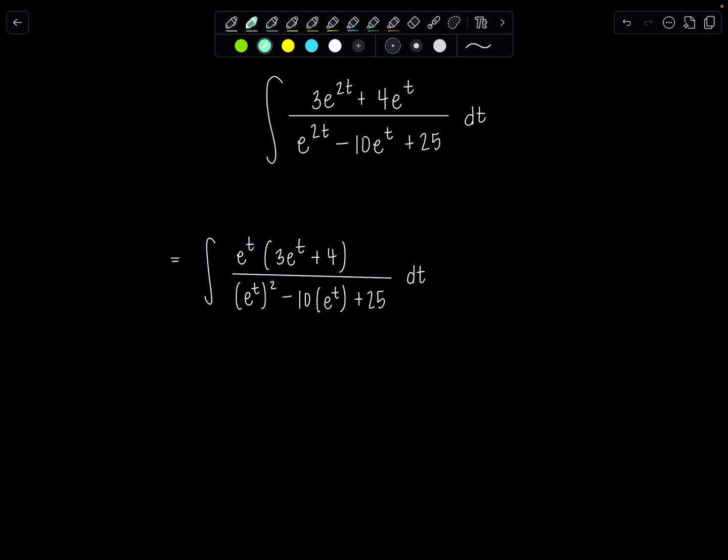Perfect. So now things are all in place if I go ahead and let u equal e to the t. Then du is going to be e to the t dt, and see how we have that extra e to the t dt right there? That's going to be my du, and now I can rewrite everything else in the integral all in terms of u.